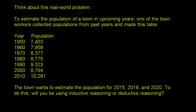Think about this real world problem. To estimate the population of a town in upcoming years, one of the town workers collected populations from past years and made this table. They have years starting with 1950 going up by increments of 10 years, and they figure out the population of the town in each of those years. The town wants to estimate the population for 2015, 2018, and 2020.